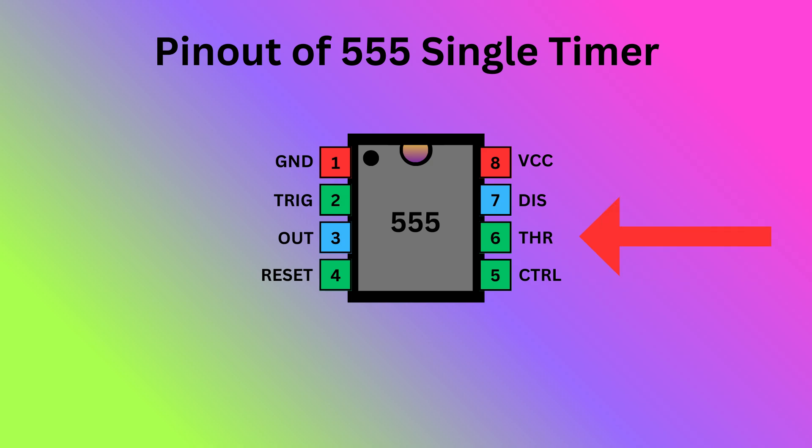Pin 6 is threshold. It monitors the voltage of the capacitor connected to the circuit. Pin 7 is discharge. It controls the charge and discharge cycle of the timing capacitor. Pin 8 is VCC. It is responsible for supplying the power to the IC.